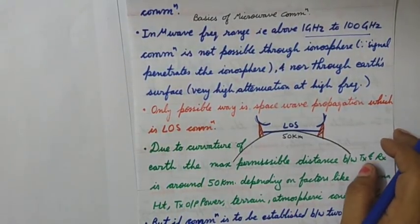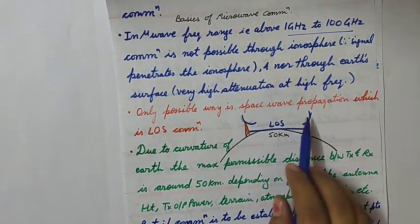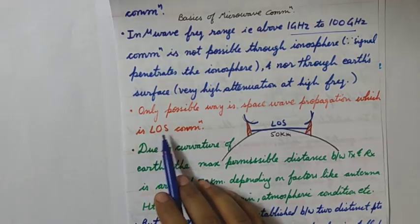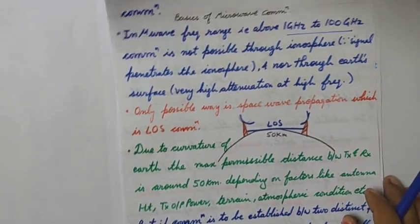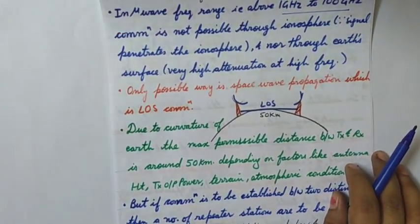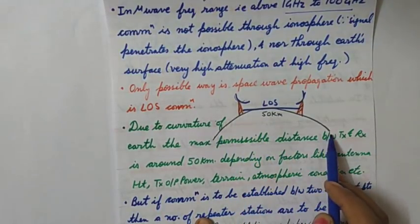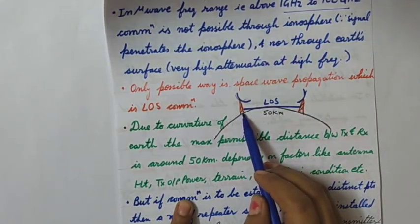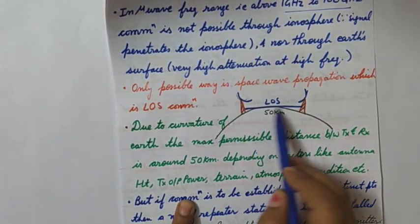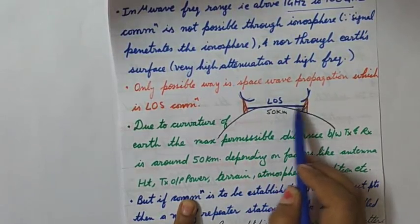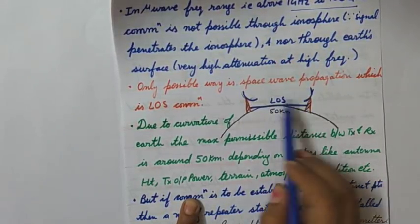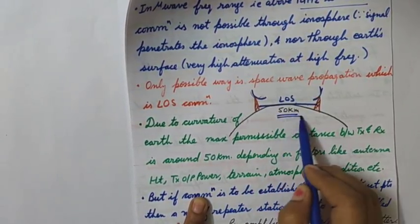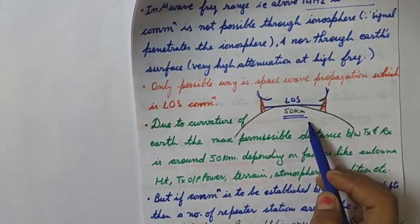So in this frequency range, the only possible way to communicate is through space wave propagation, which is line-of-sight (LOS) communication. For line-of-sight communication, due to the curvature of the earth — which is drawn here with two antennas placed — the maximum permissible distance for line-of-sight, meaning the two antennas are visible to each other, is 50 kilometers.